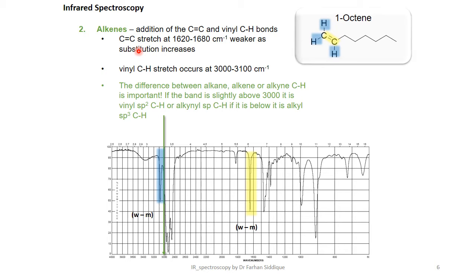Then we have an example of alkenes. Here we got the example with 1-octene. Alkenes have addition of the C=C and vinyl C-H bonds. C=C stretch at 1620 to 1680 cm⁻¹ is weaker as substitution increases. Vinyl C-H stretch occurs at 3000 to 3100 cm⁻¹. The difference between alkane and alkyne C-H is important. If the bond is slightly above 3000 it is vinyl sp² or alkyne sp. If it is below it is alkyl sp³.